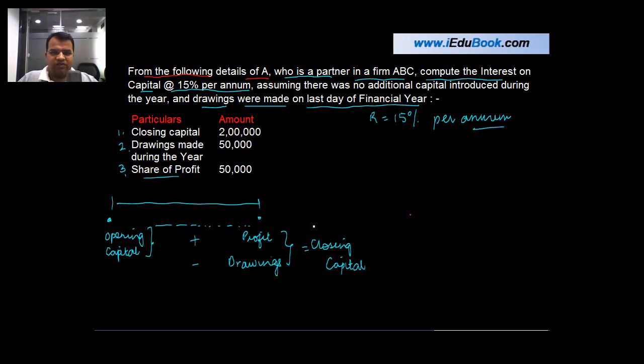In your case what is happening is you are given about this closing capital. Let me use a different color for this. You are given the closing capital as 2 lakh. You are given the drawings made during the year as 50,000. You are given that the profit share is 50,000 again. But you do not know what is the opening capital.